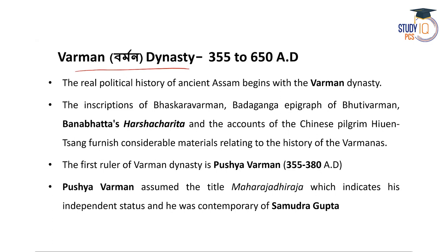The real political history of Assam begins with the Varman dynasty, from 355 to 650 AD — that is the 4th to 7th century. The copper plate and rock inscriptions of Bhaskarvarman, the Bedaganga epigraph of Bhutivarman, Banabhatta's Harshacharita, and the accounts of the Chinese pilgrim Xuanzang all furnish considerable material regarding the history of the Varman dynasty.